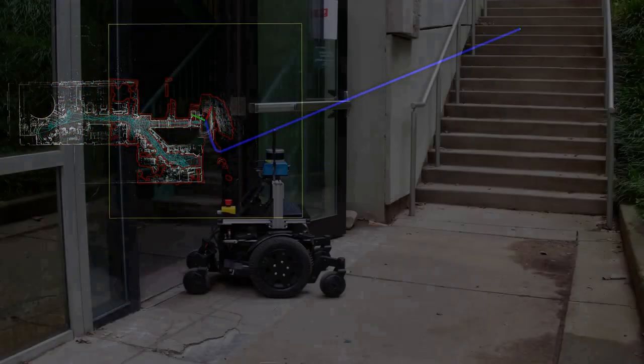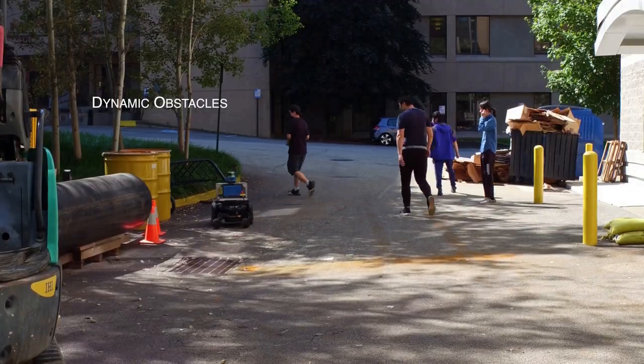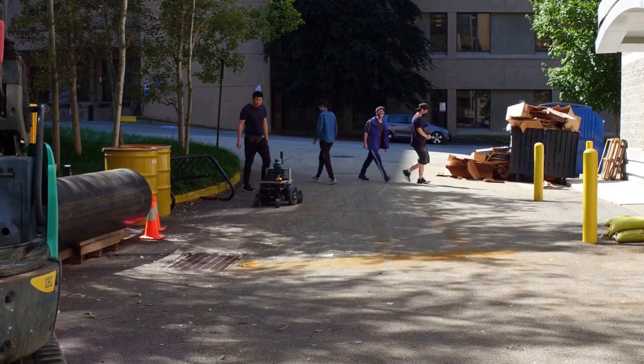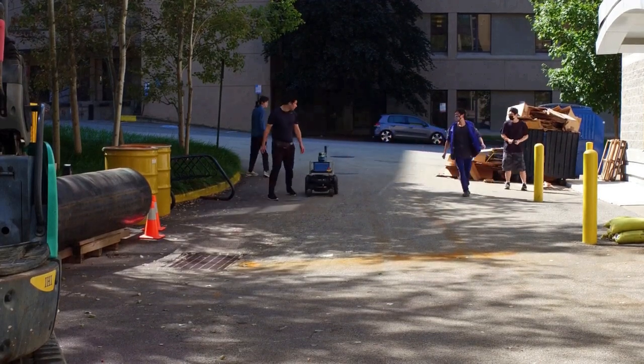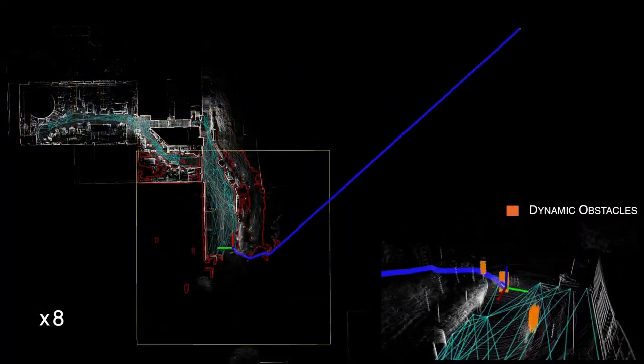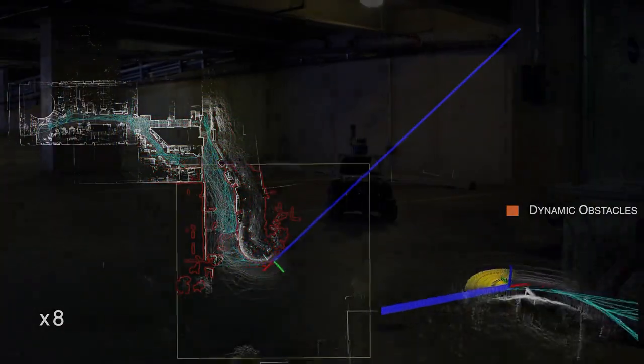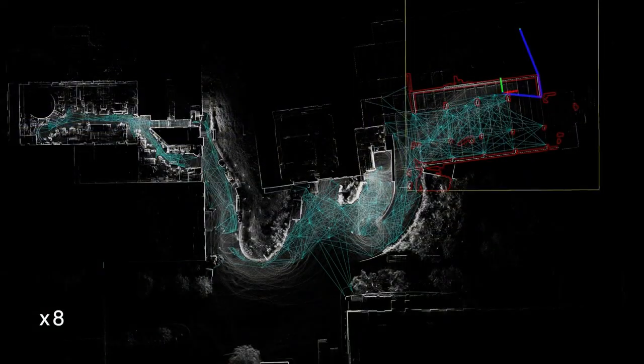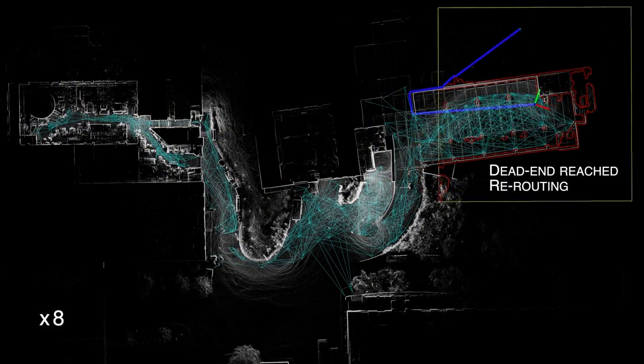When encountered with dynamic obstacles, the robot successfully navigated through the dynamic obstacles by quickly updating its environment representation. Then, after the robot got into a dead-end, it was able to promptly re-plan the path and finally reach the destination.